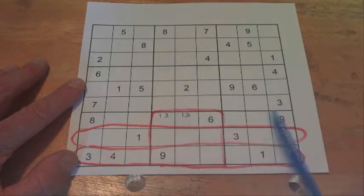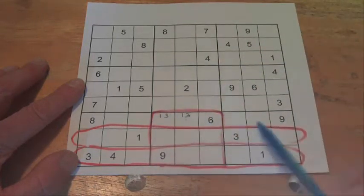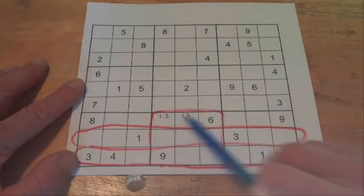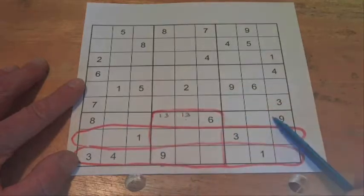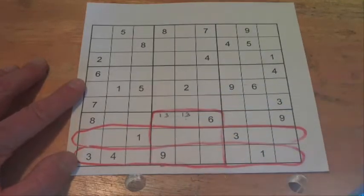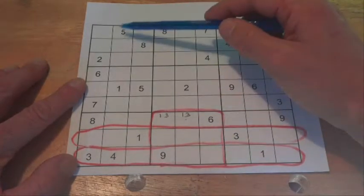So what that helps us do is it doesn't help us solve those two cells, but it'll help us solve another cell in this row, and it's actually to do with the number 5.